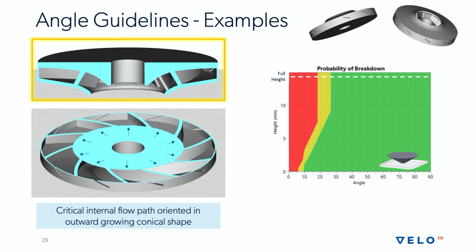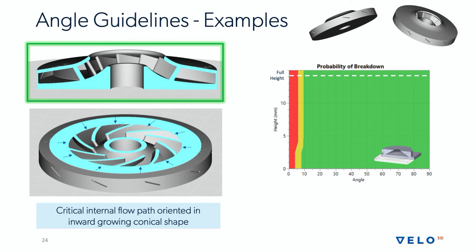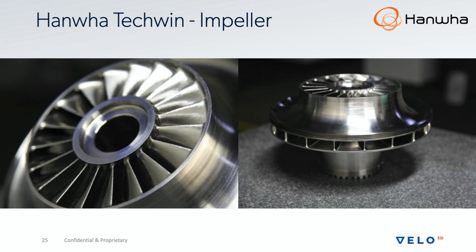We have to keep these behaviors in mind when printing parts like shrouded impellers, where proper orientation is critical to avoid process breakdowns. If we orient the part to create a large outward growing cone, this is less than ideal and will more than likely show process breakdowns. If we flip that same impeller upside down, we now have an inward growing cone — a much more desirable print orientation that we can print support-free on the inside without process breakdowns. These techniques were leveraged to print the Hanwha Tequin impeller, an Inconel print with low overhangs that you just couldn't print support-free on another system.